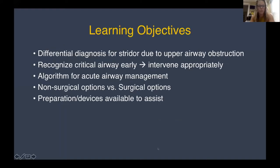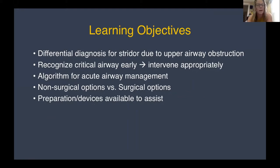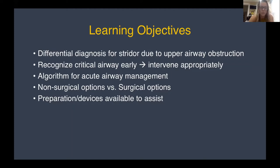Learning objectives: we'll talk about stridor and the differential diagnosis, airway emergencies in the emergency department, specifically acute upper airway obstruction, and how to evaluate that acute upper airway stridor consult. We'll recognize what a critical airway is early and how to intervene. We'll go through an algorithm of how to evaluate these airways, non-surgical options for managing acute airways, surgical options, and how to be prepared with available devices.